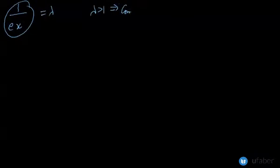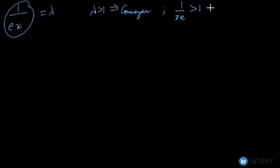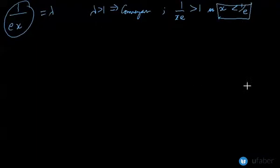The limit gives λ = 1/(ex). We know that if λ > 1 the series is convergent, which means if 1/(ex) > 1, the series is convergent, or equivalently x < 1/e. The series is divergent if the ratio is less than 1.